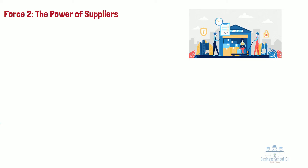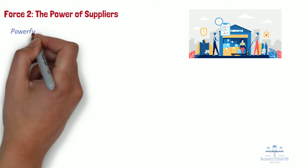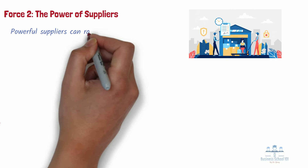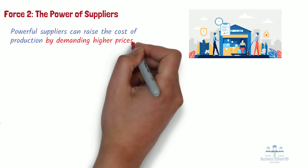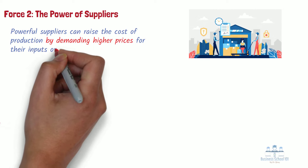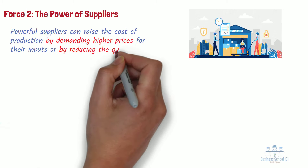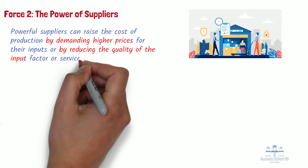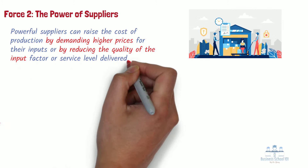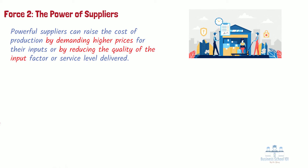This force reduces a firm's ability to obtain superior performance because powerful suppliers can raise the cost of production by demanding higher prices for their inputs or by reducing the quality of the input factor or service level delivered.